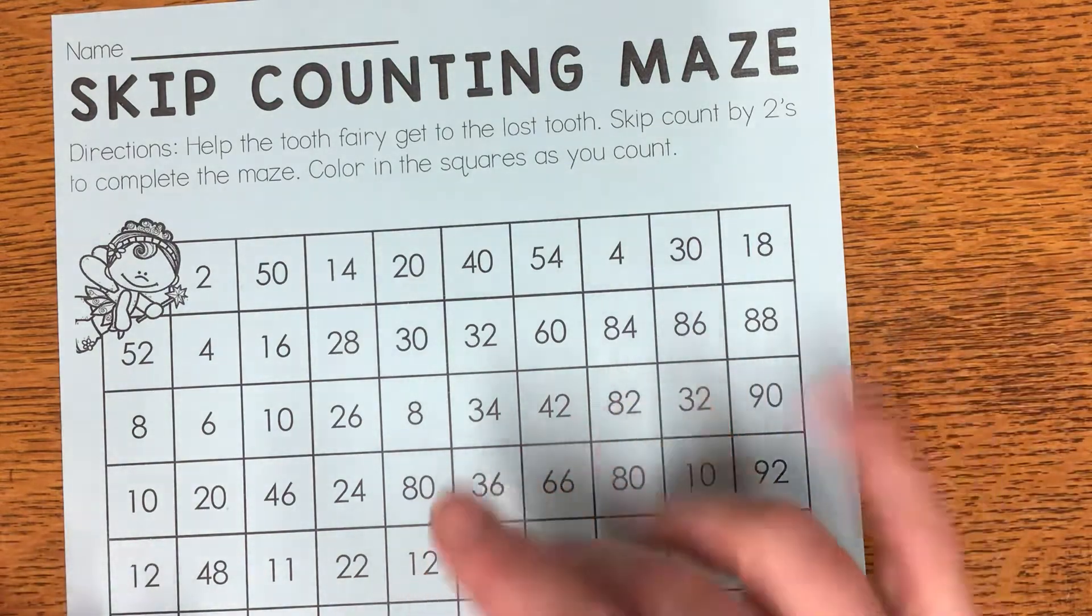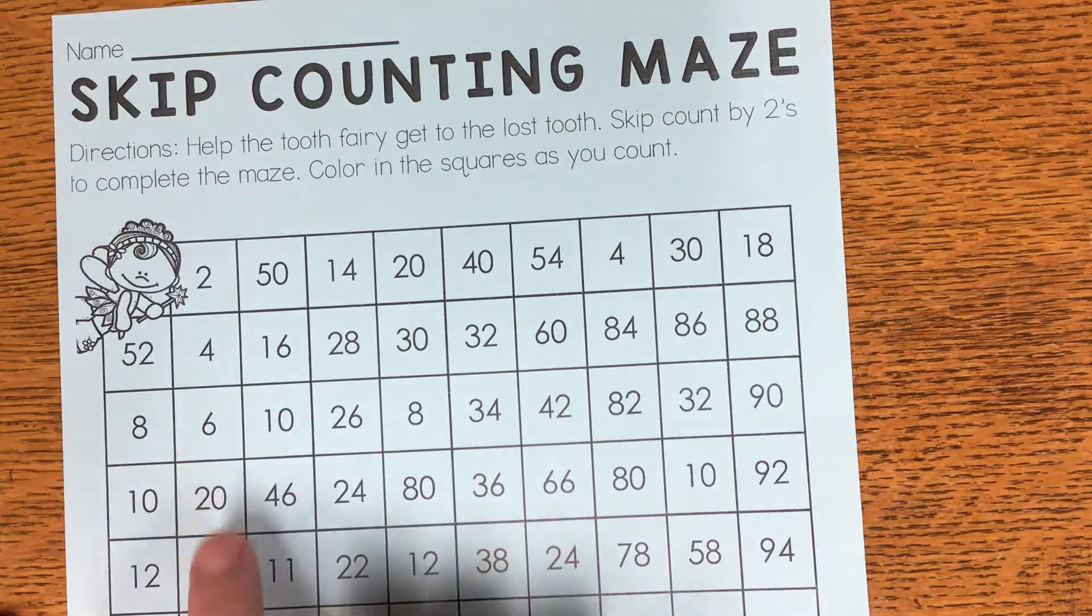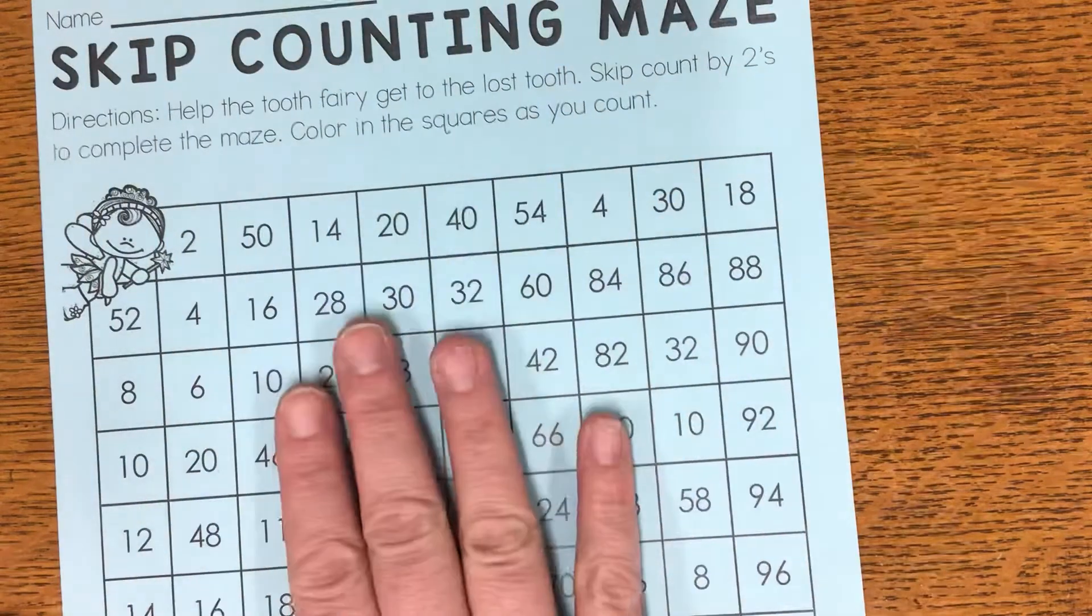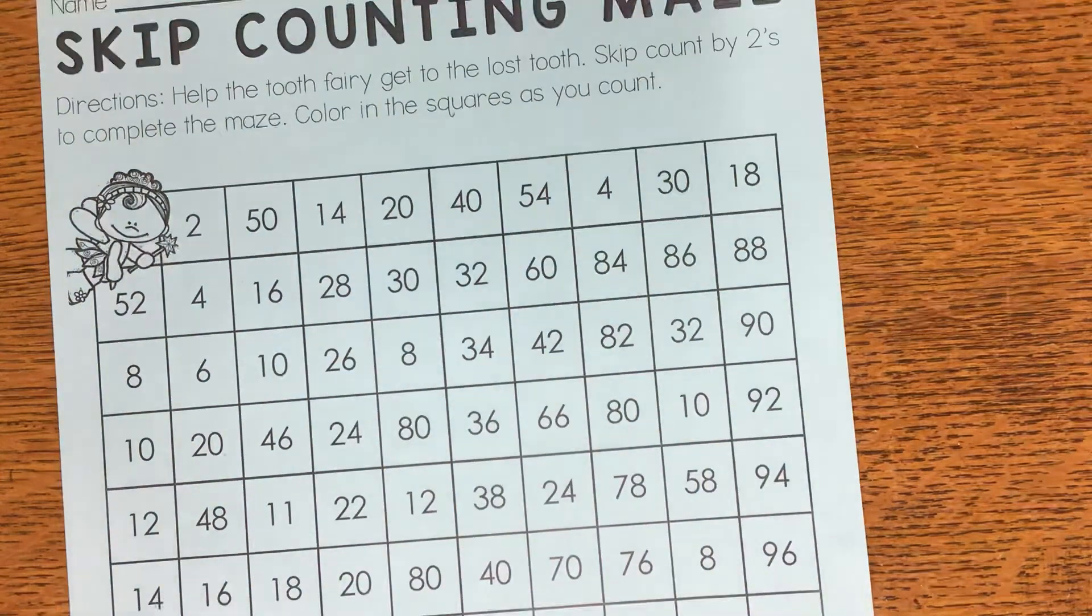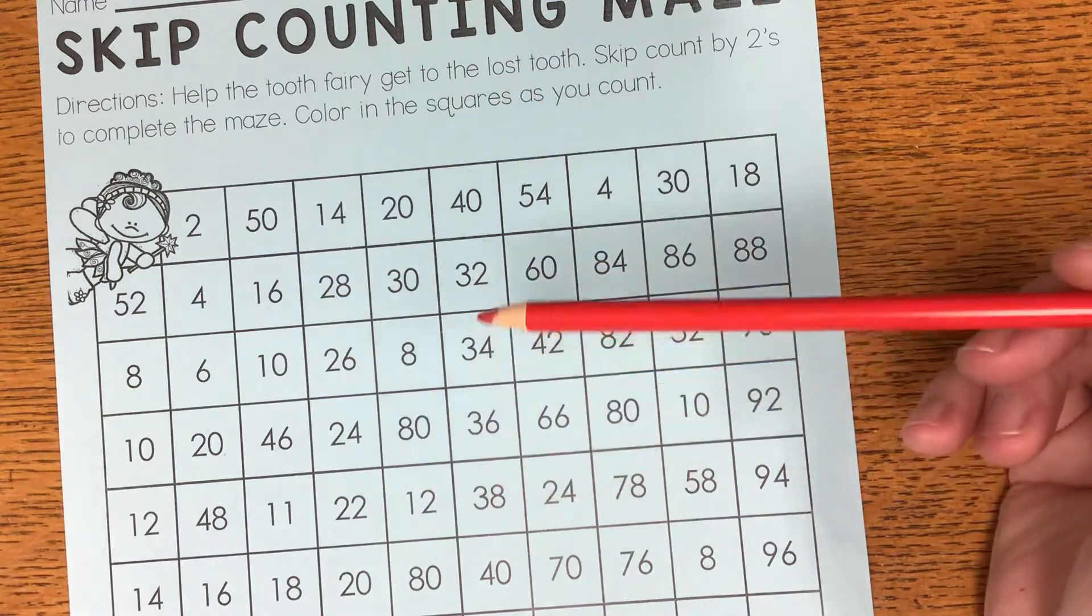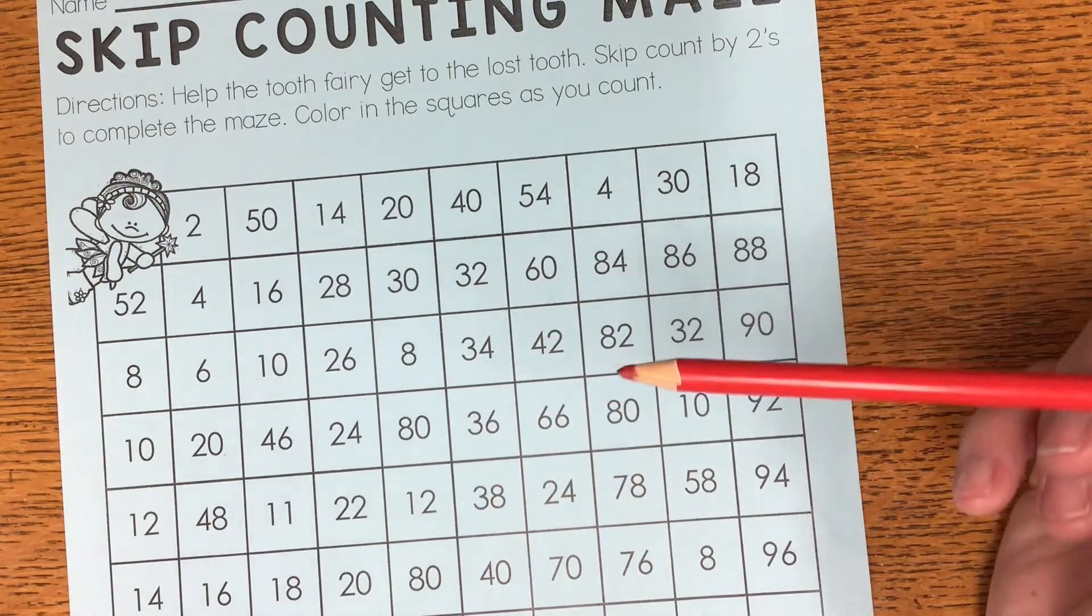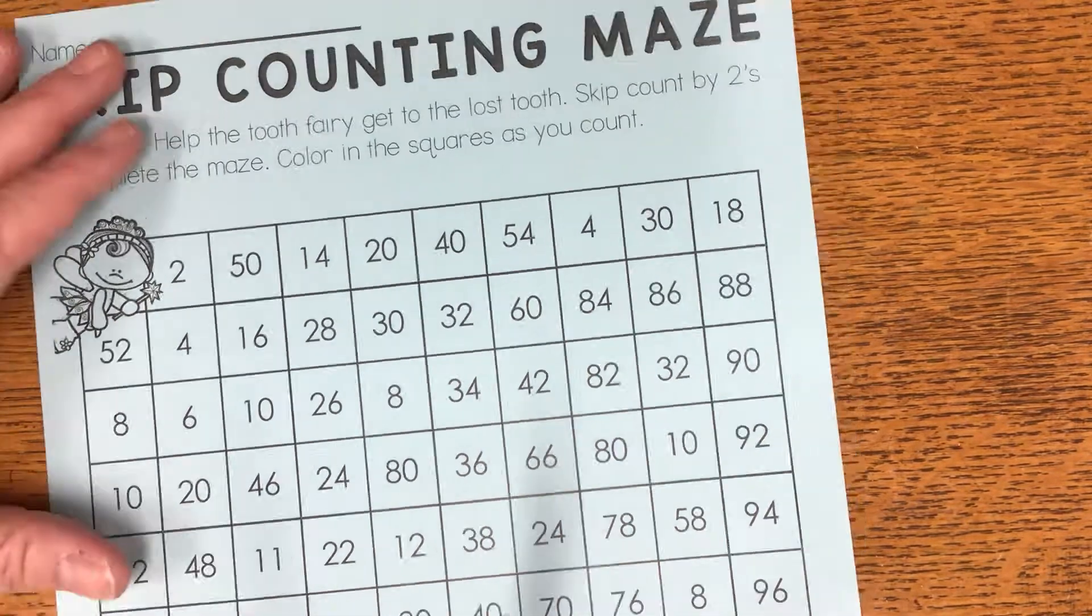So every time we're adding two. And so we are making a maze where we add two. I'm going to start it with you and then you are going to finish it. The first thing I'm going to do is get a colored pencil. I'm going to use red. If you'd like to use a marker, that's okay. There's nothing on the back of this page where you will wreck something by bleeding through it.